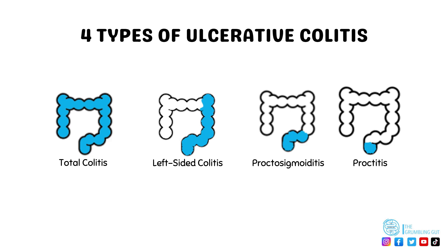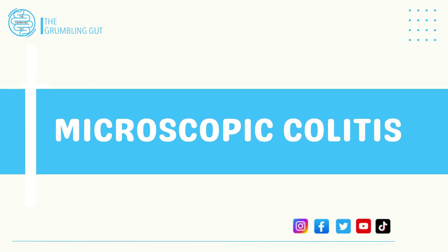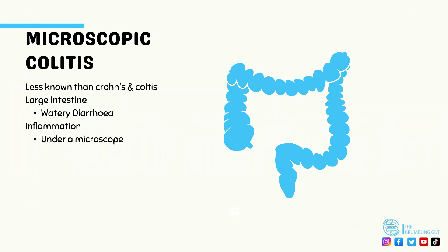Lastly, proctitis is where only the rectum — the last portion of the large intestine — has inflammation. The Montreal classification is also used to classify ulcerative colitis, but it is only based on extent and severity. Next, we're going to look at microscopic colitis, the lesser-known type of inflammatory bowel disease.